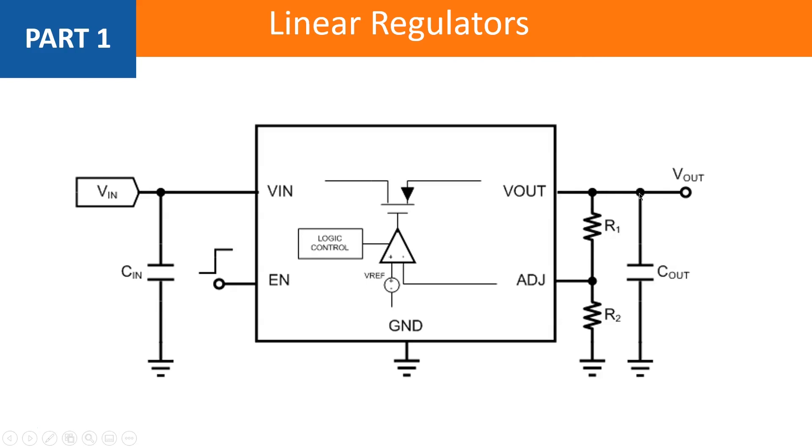So let's just say that the output voltage is lower than what it wants to be. Let's say this output is supposed to be 2 volts, and as an example it's less than that. So that means that this voltage here is going to be less than the 1.2 volts that it should be when the output is at the correct voltage. So this will be less than 1.2.